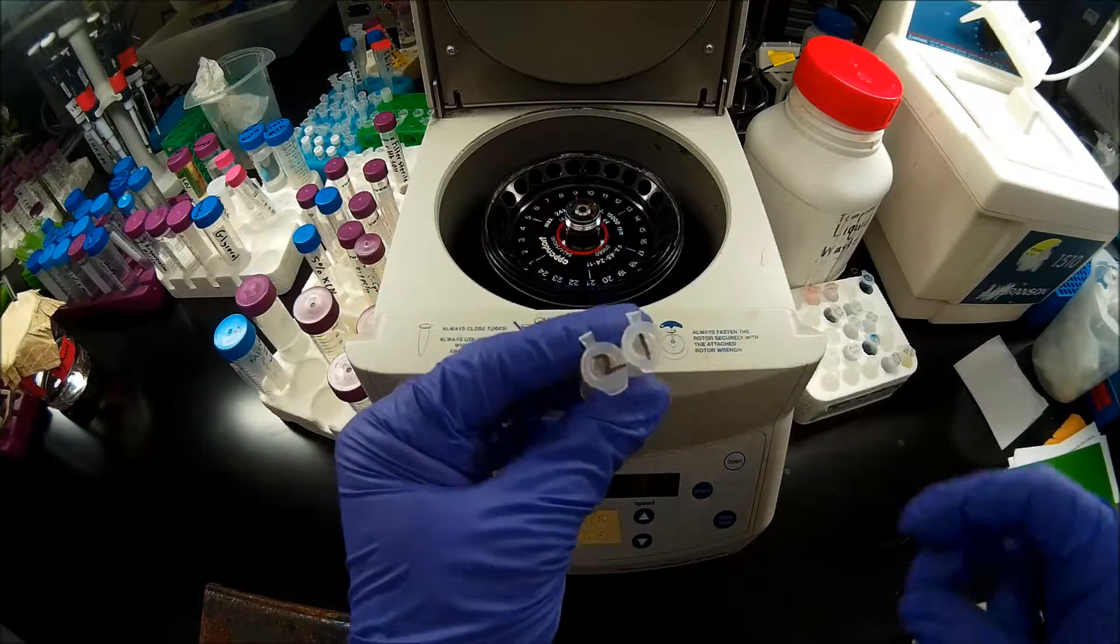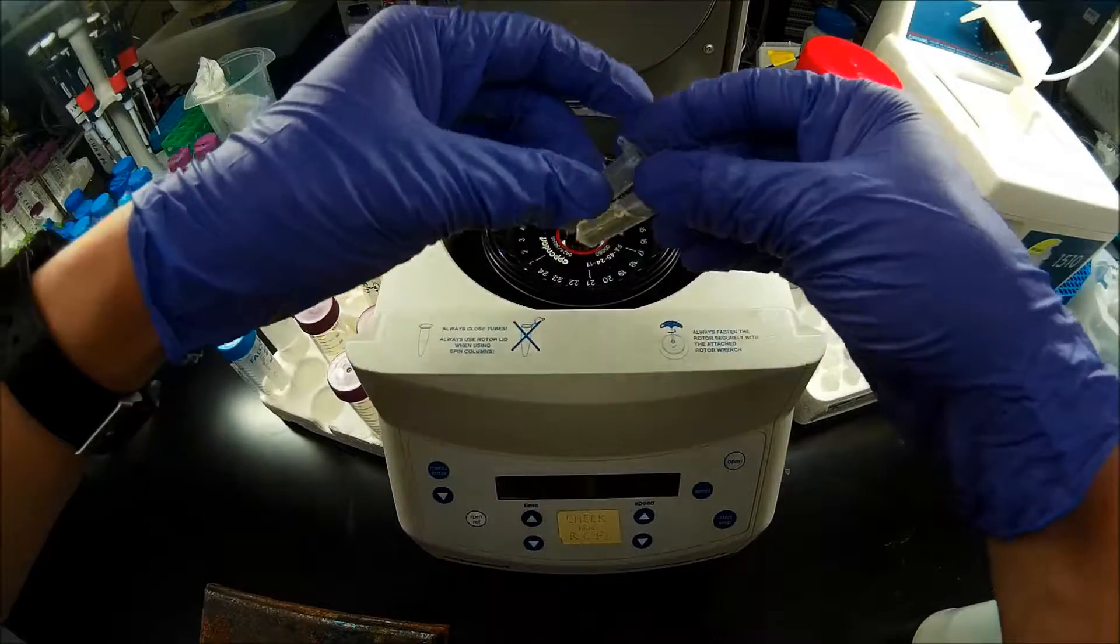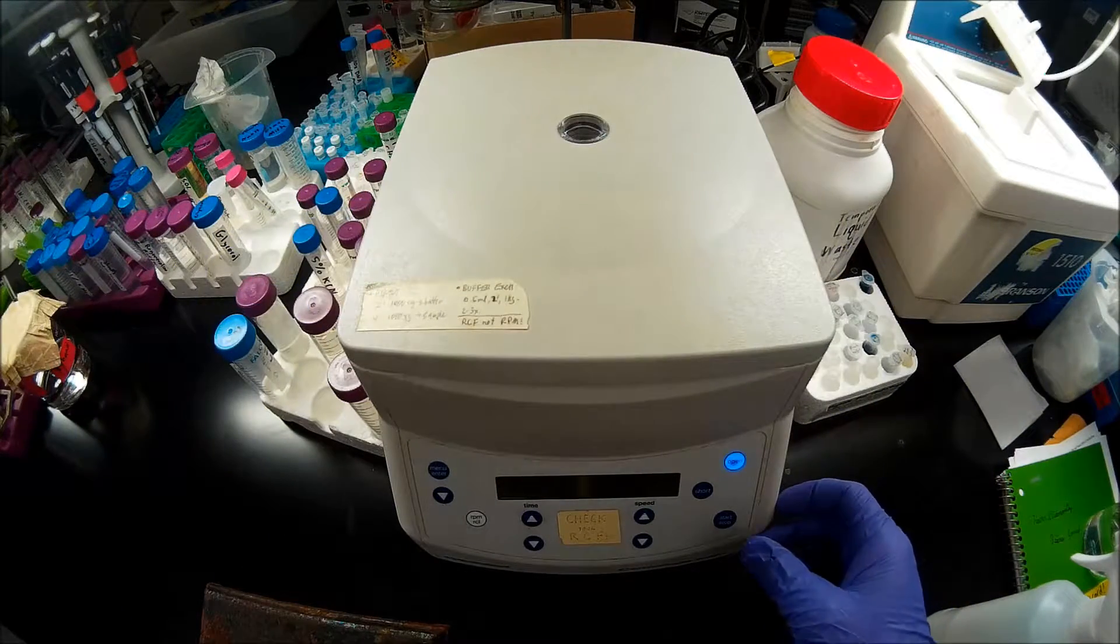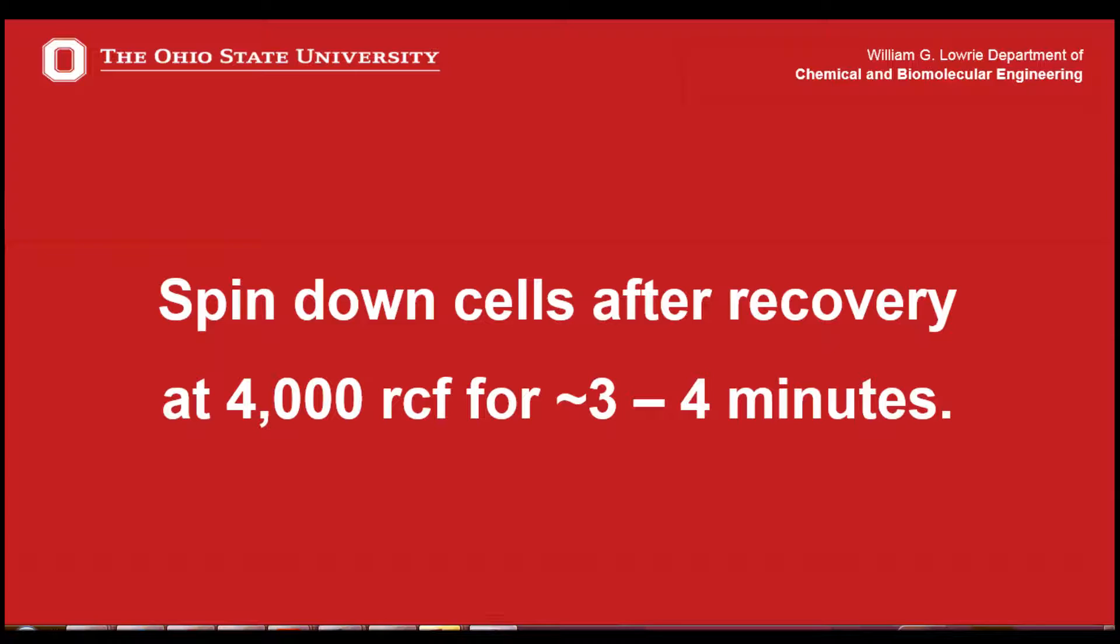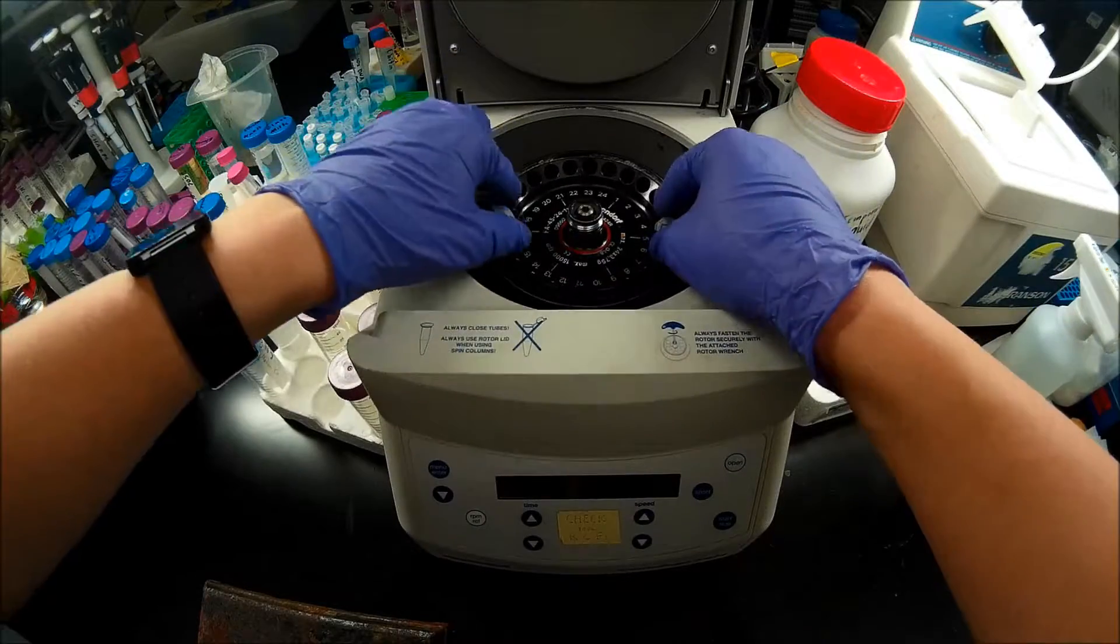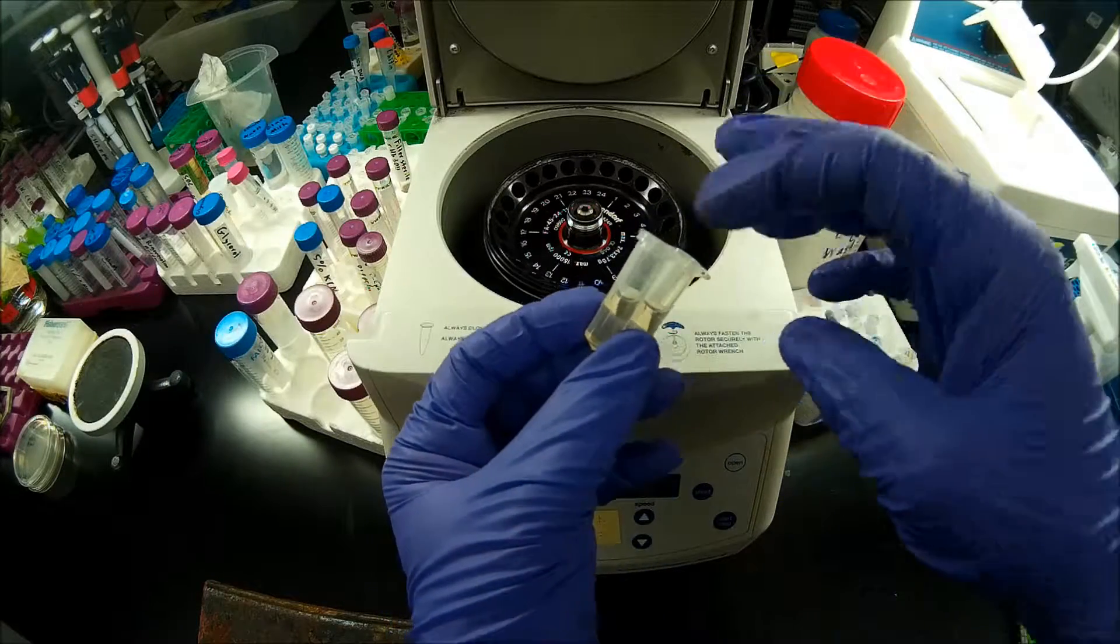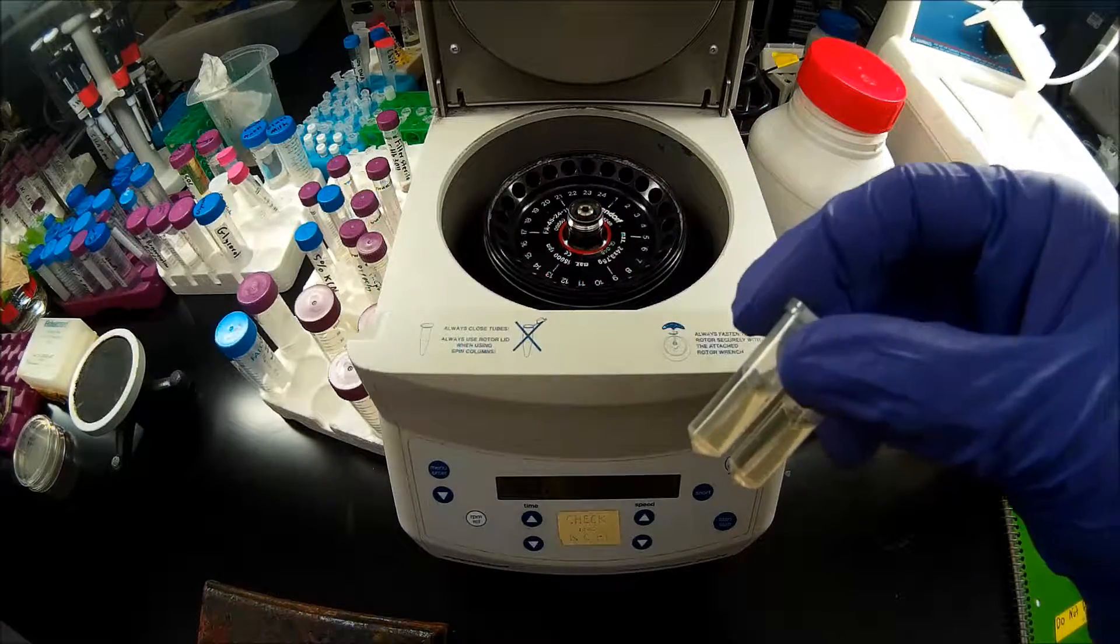After allowing my cells to recover on the rocker plate in the 37 degree incubator for 20 minutes, I want to now harvest the cells that are in suspension. So to do that, I'm going to put these in the centrifuge and spin them down for 3 minutes at no more than 4000 RCF. Once my cells are done spinning, I want to remove them from the centrifuge and discard the supernatant. My pellet is going to be pretty small. The purpose of the recovery step is to allow your cells to recover, not to allow them to multiply. This SOC doesn't have any selection antibiotic in it. So if I leave them in the incubator for too long, my non-plasmid bearing cells will start to outnumber my plasmid bearing cells.